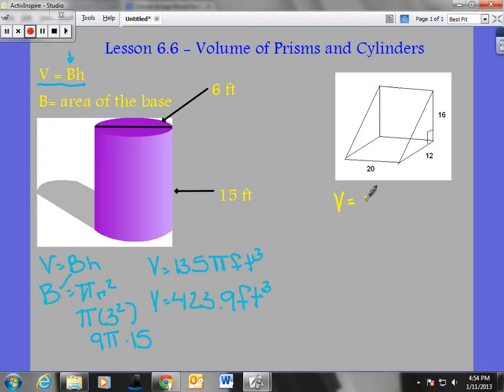V equals area of the base times the height. I'm going to treat this triangle right here as the base. That's my capital B. I'd find the area of that base. So, area of the base equals, well, for a triangle, it's one half base times height. Base times height.